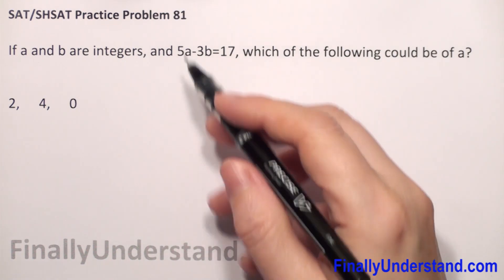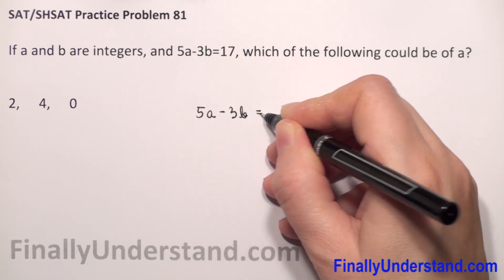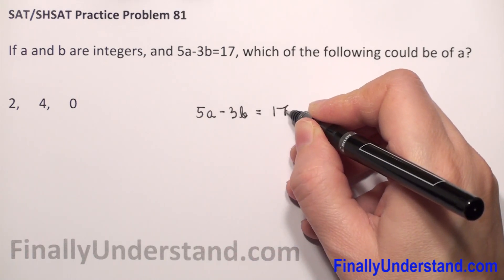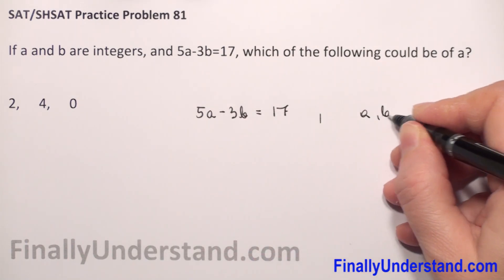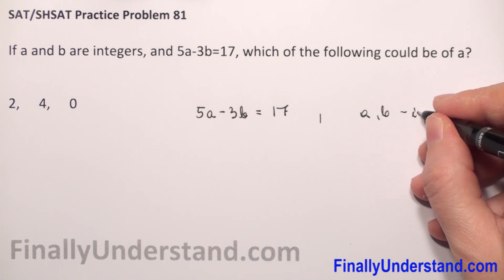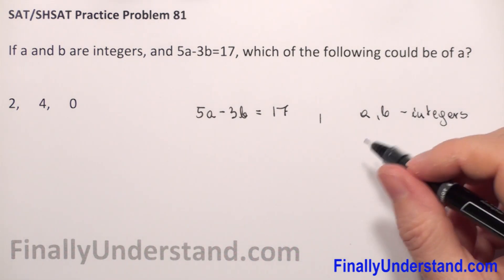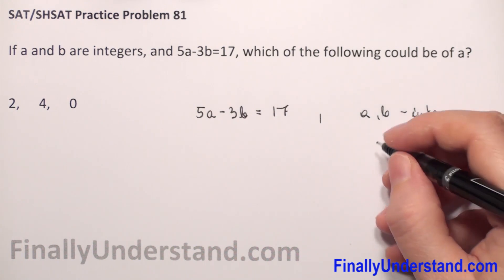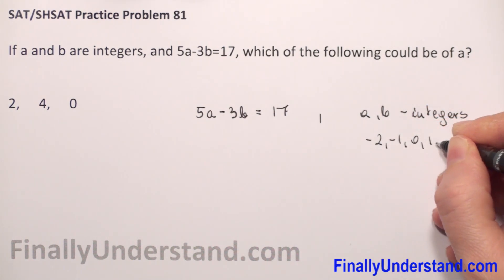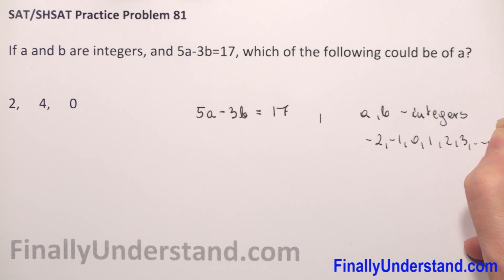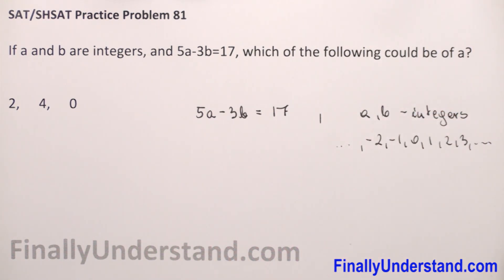We have the given equation 5a minus 3b equals 17, and we know that a and b are integers. That means a and b can be values like negative 4, negative 3, negative 2, negative 1, 0, 1, 2, 3, and so on.